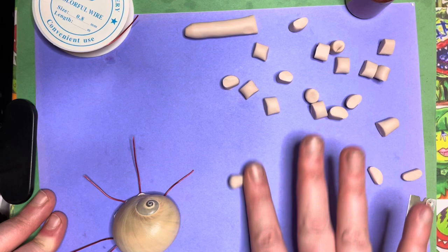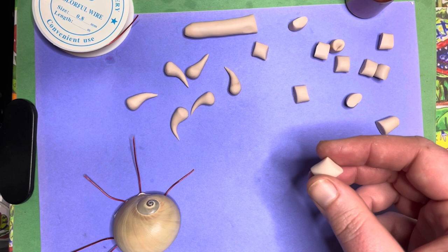And then roll the other 12 into balls. And then we take our two smaller bits and roll them into large grains of rice.